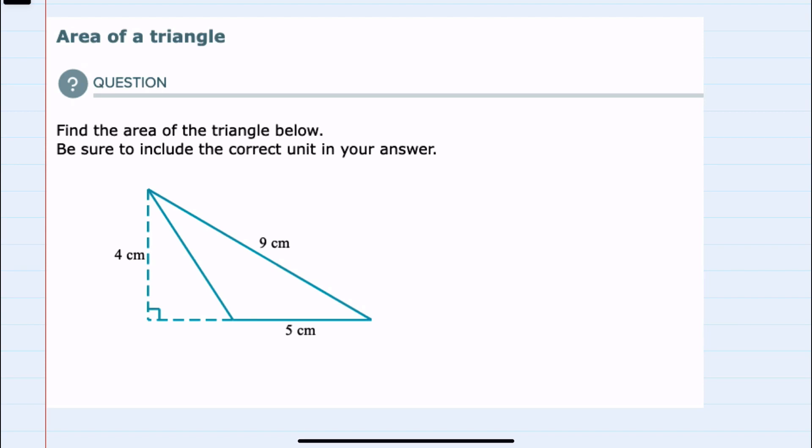In this video I'll be helping you with the Alex problem type called area of a triangle. We're asked to find the area of the triangle and to include the correct units. We'll start by recalling the formula for the area of a triangle: it is one half the length of the base times the height of the triangle.